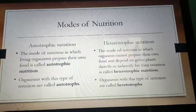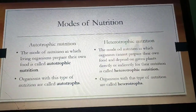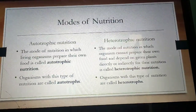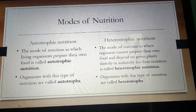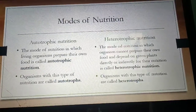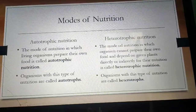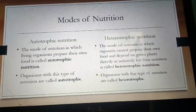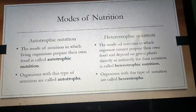Our next topic is modes of nutrition. The first one is autotrophic nutrition and the second one is heterotrophic nutrition. Both are opposite to each other. The word 'auto' means self and 'trophic' means nutrition. The mode of nutrition in which living organisms prepare their own food is called autotrophic nutrition. Organisms with this type of nutrition are called autotrophs.